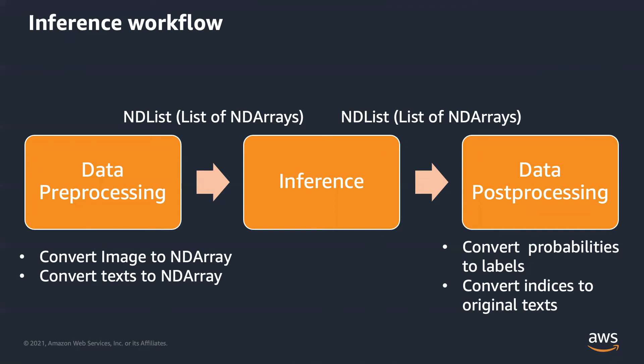In addition, there are several pre-processing steps like crop and normalize to get a better result before it is ready for training. After running the model inference, you will get probabilities for each label. You pick the label with the highest probability or top five and map the label index back to a human-readable label. This step is called data post-processing.